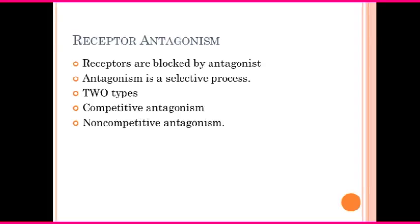To recap: an antagonist is a drug which has affinity — that is, the love for the receptor — but does not have the intrinsic ability to produce an effect. It is not capable of activating the receptor for effects to arise, but it has the affinity so it will bind to the receptor without producing any effect. From the word antagonist comes antagonism. We have two types of receptor antagonism: competitive antagonism and non-competitive antagonism.